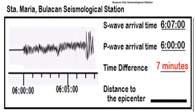So we have Santa Maria Bulacan Seismological Station. The S wave is marked by a larger jump of the line, at 6:07. The P wave arrival time is marked by the first jump of the line on smaller zigzag, which is at 6:00. Subtracting the S wave arrival time from the P wave arrival time, we have obtained 7 minutes as the time difference.